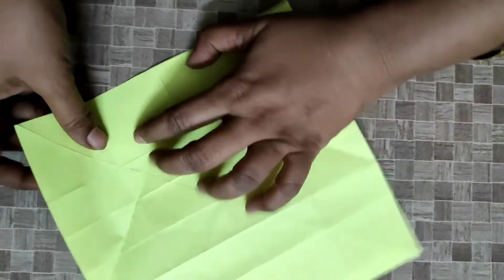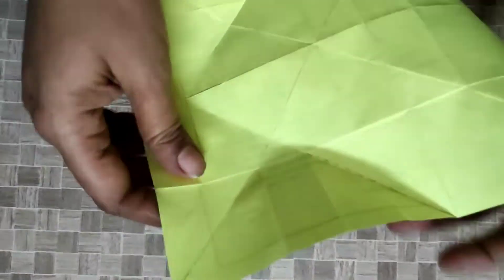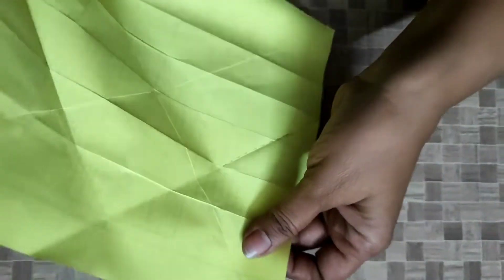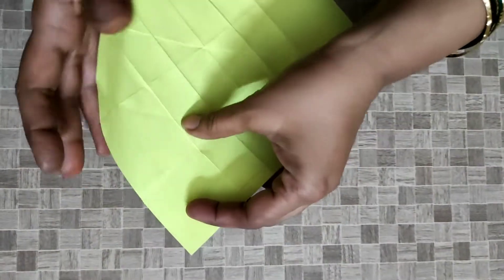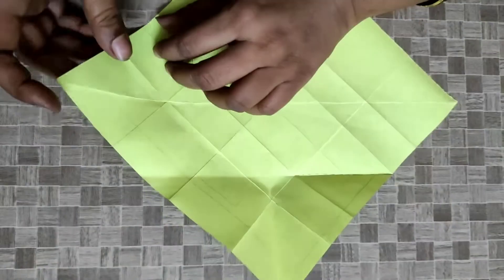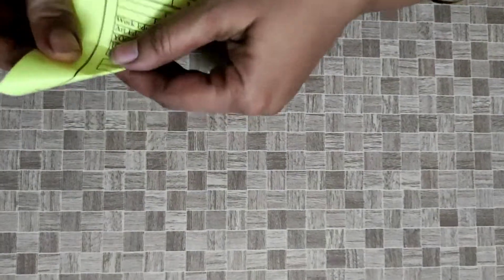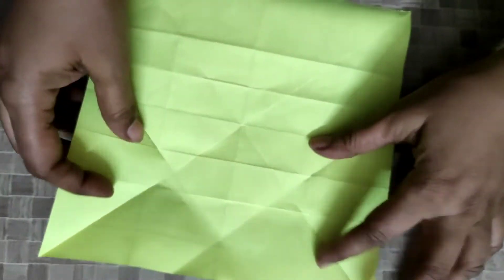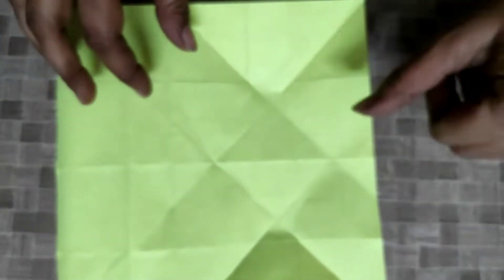Like that, this corner also fold it half. Once again fold it half. So now you can see the foldings.